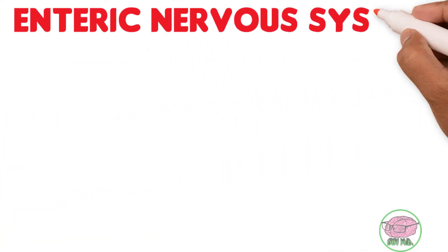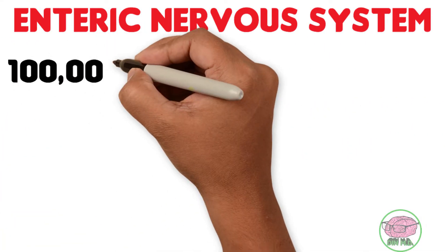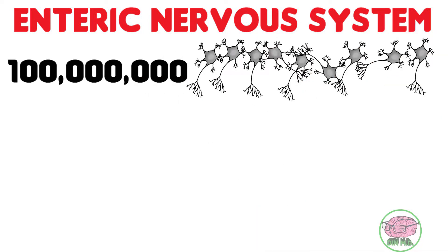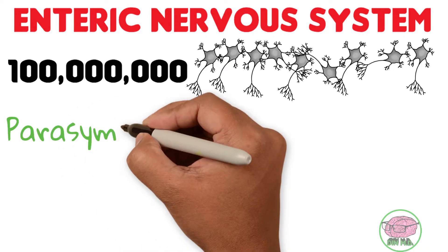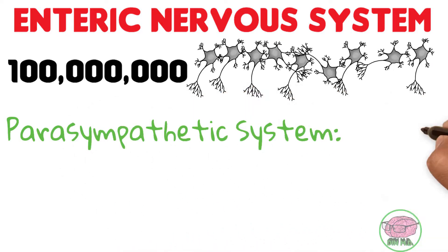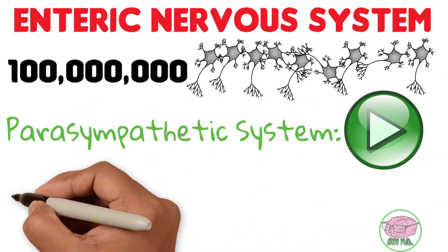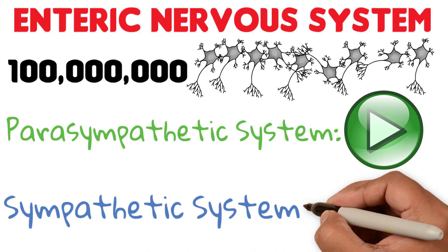There are approximately 10 to the power of 8 neurons in the whole enteric nervous system. This system is stimulated by the activities of the parasympathetic nervous system, while it is inhibited by the sympathetic nervous system.